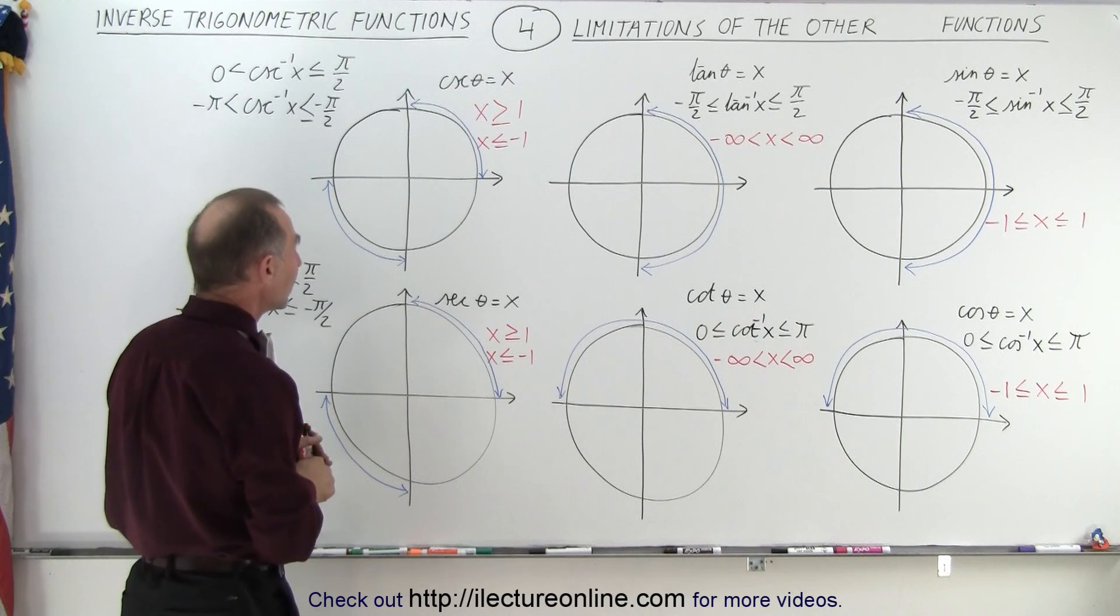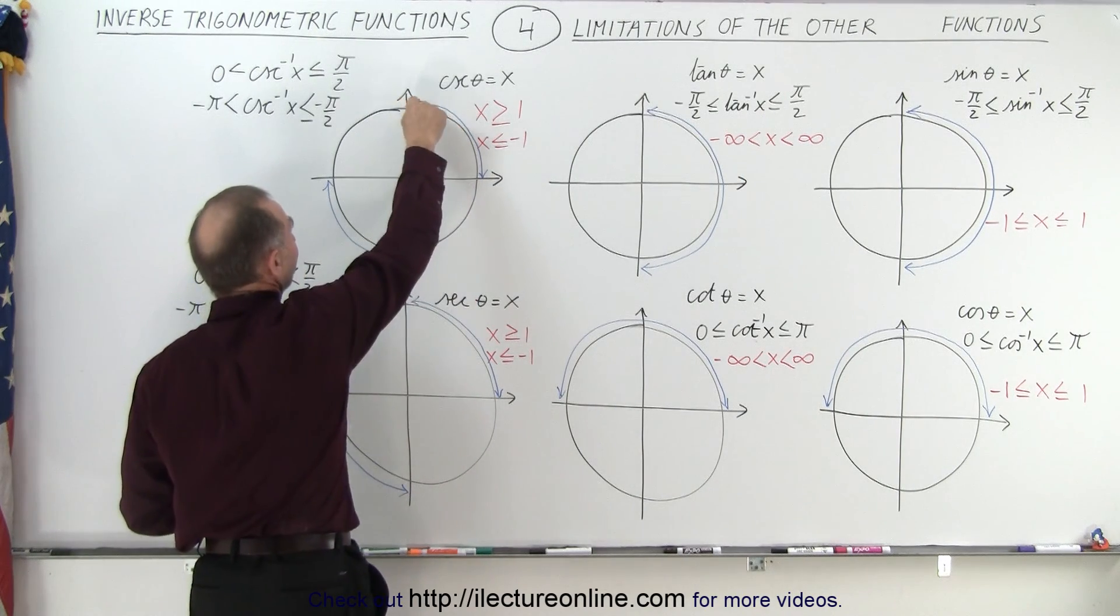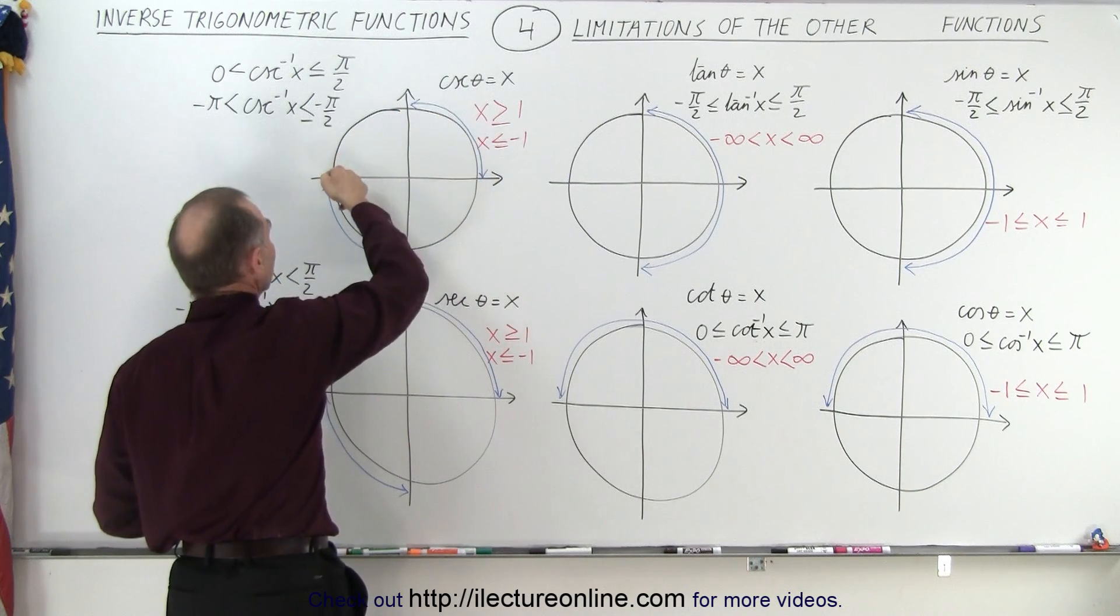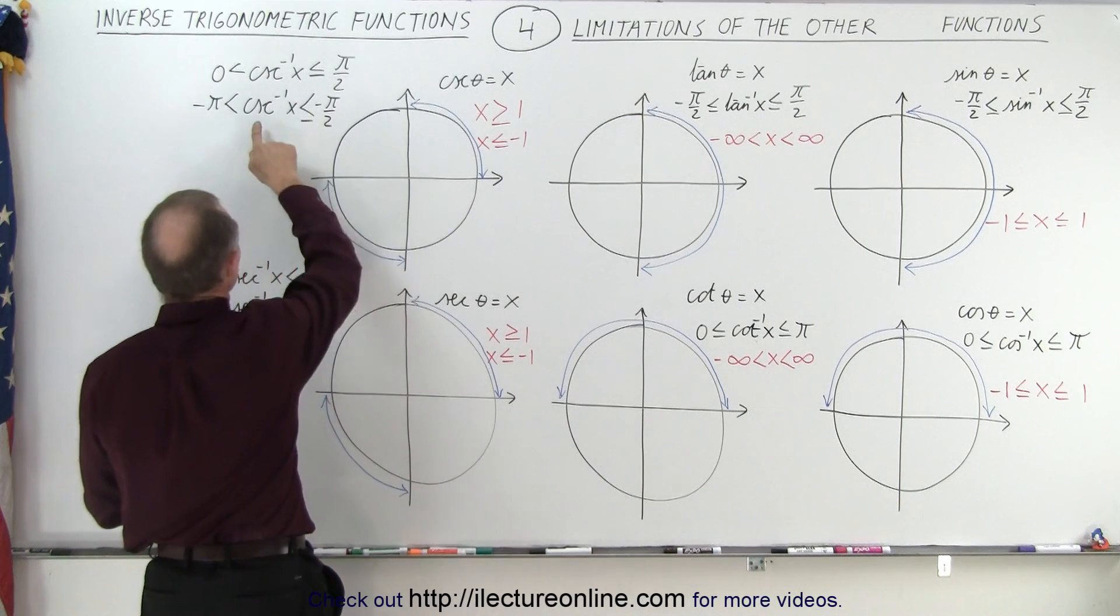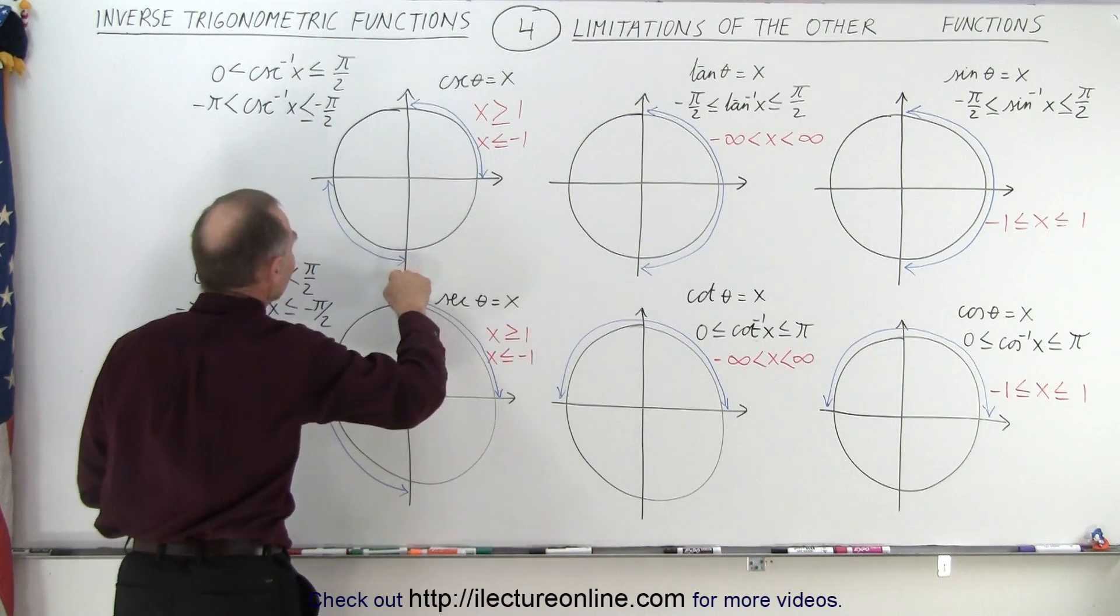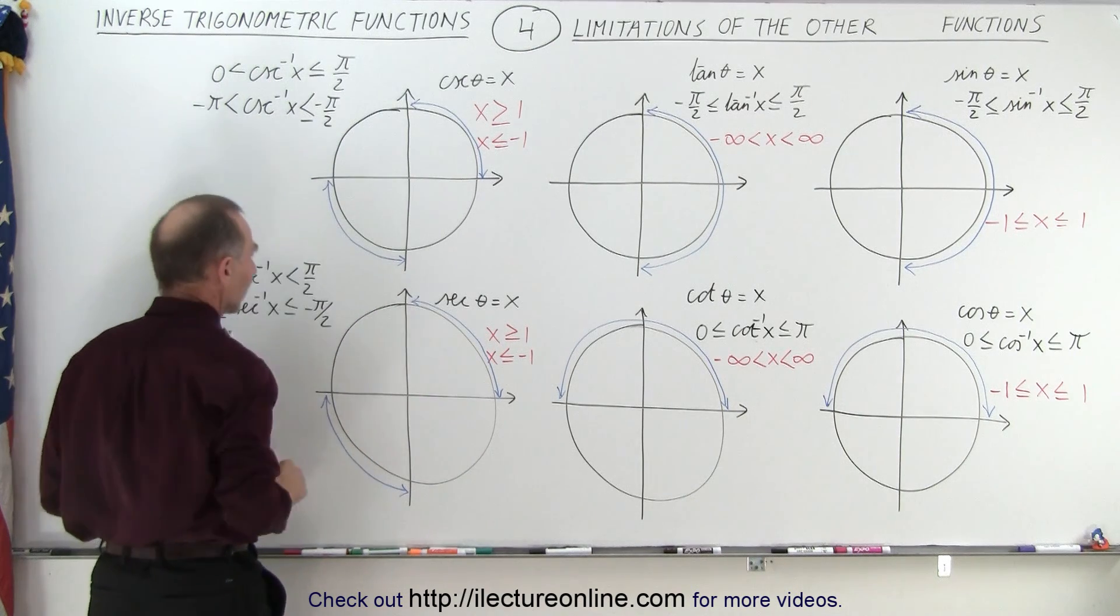When we take a look at the cosecant and the secant, notice that for the cosecant the range of values for the angle is from 0 to 90 and from 180 to 270, although they tend to express it in terms of negative angles. So negative 90 to negative 180 or negative pi over 2 to negative pi.